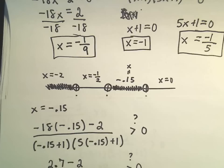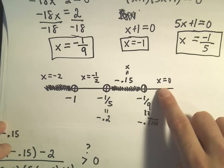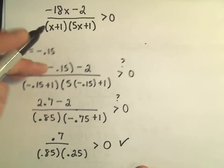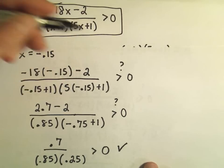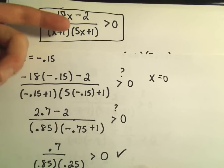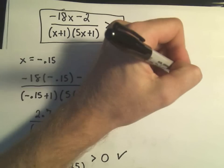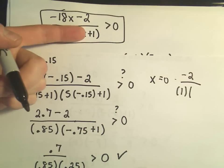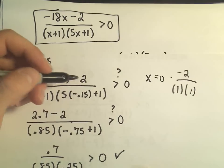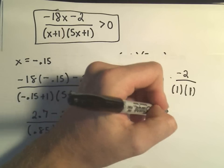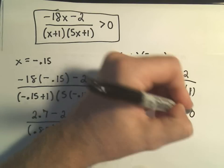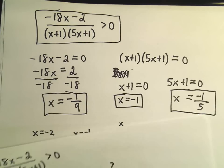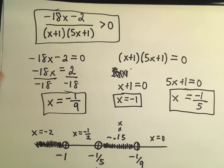Last but not least, we check x equals 0 in the inequality. If we plug in x equals 0, in the numerator we're just left with negative 2. In the denominator, we have positive 1 in the first set of parentheses and positive 1 in the second, so we get negative 2 over positive 1, which is negative 2. Is that greater than 0? Definitely not. Since 0 doesn't work, it implies nothing bigger than 0 works on our number line.